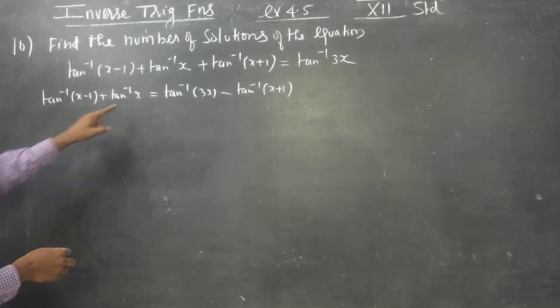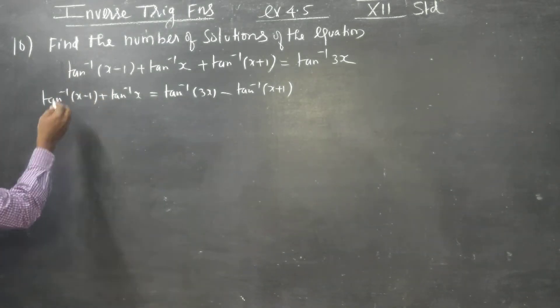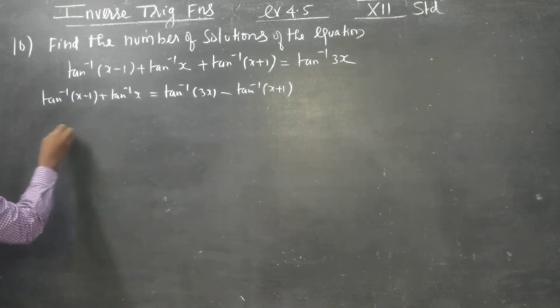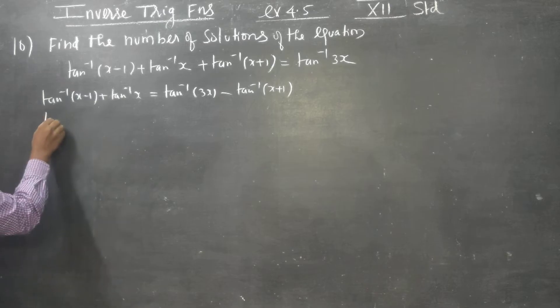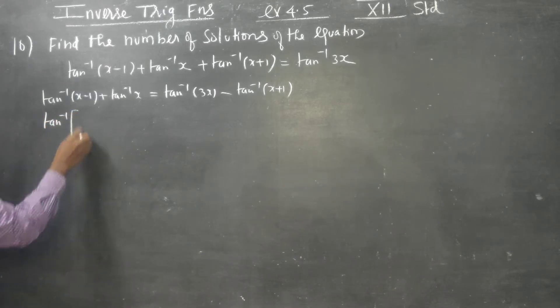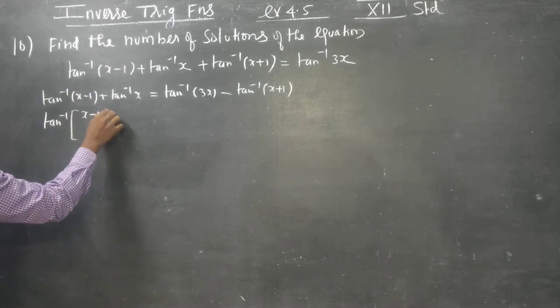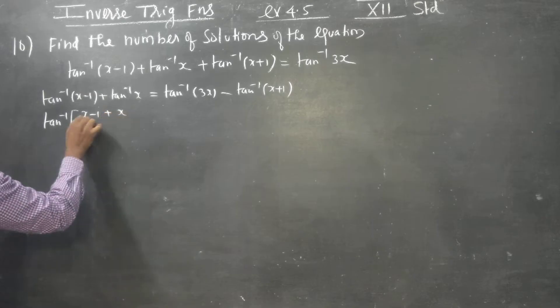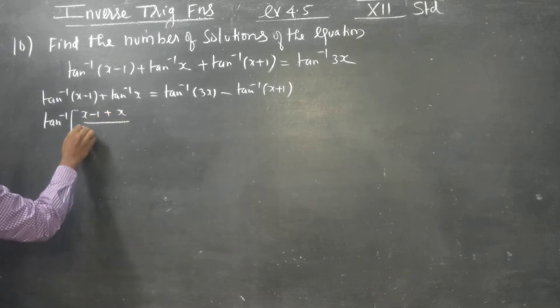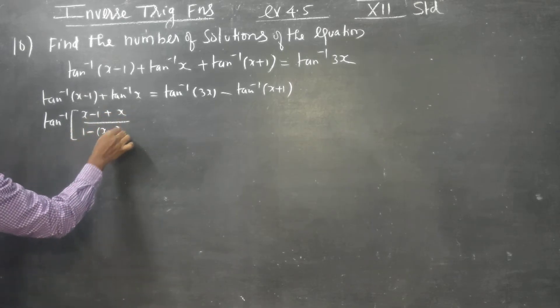We have a formula: tan inverse of a plus tan inverse of b equals tan inverse of (a plus b) divided by (1 minus a times b).